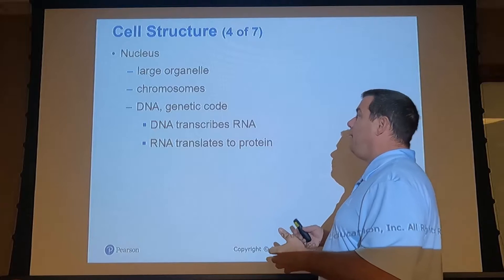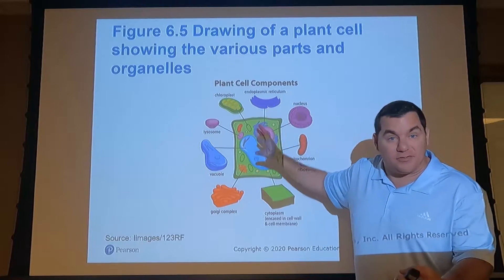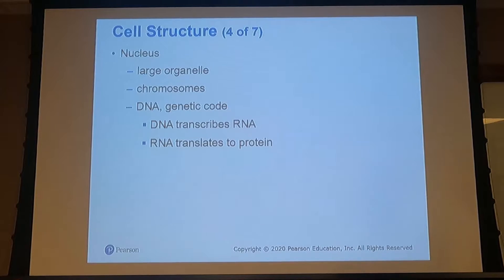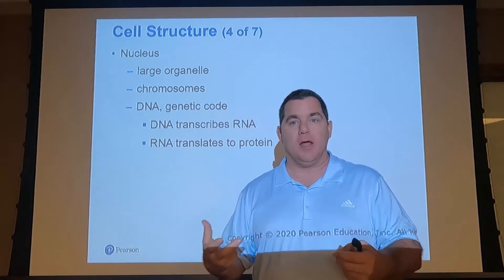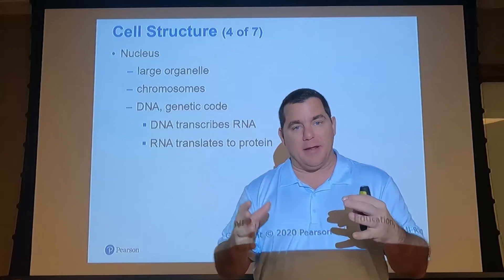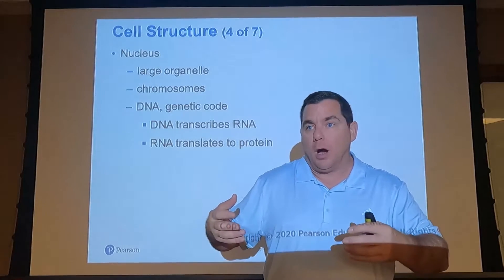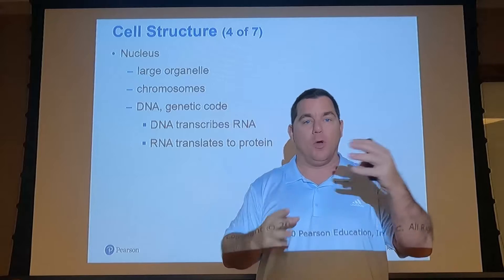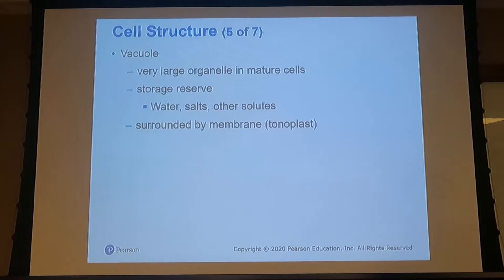The nucleus is the core of the cell — the brain and central component — though it may not be exactly in the center. The nucleus contains all the DNA and RNA, which creates proteins and has an impact on cell elongation. It holds all the genetic information: how the plant is supposed to grow, node length, leaf shape, whether it is a monocot or a dicot — all of that information resides in the nucleus.